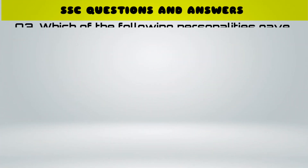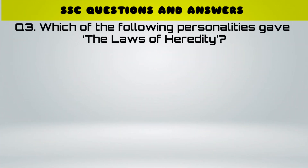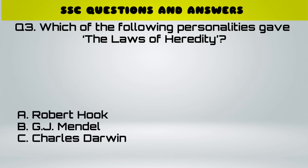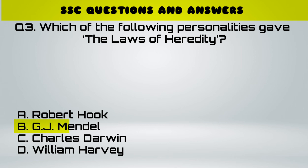Question number 3. Which of the following personalities gave the Laws of Heredity? A. Robert Hooke, B. G.J. Mendel, C. Charles Darwin, D. William Harvey. Answer: B. G.J. Mendel.